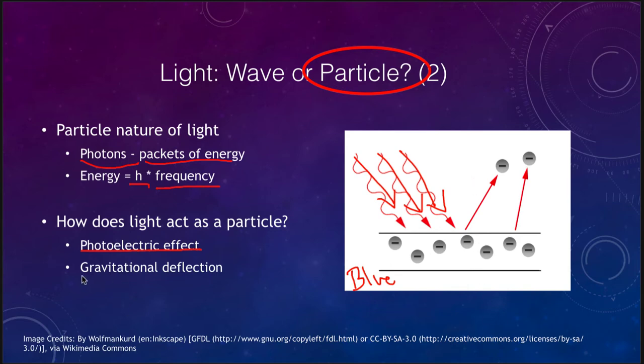Another way is through gravitational deflection. Einstein's general relativity tells us that light will be bent as it passes near a massive source. And that is another way in which light behaves like a particle, as waves would not have this same type of effect.